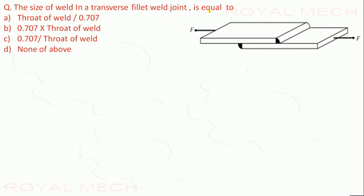The size of the weld in a transverse fillet joint is equal to: throat of weld upon 0.707, or 0.707 into throat of weld, or none of the above.